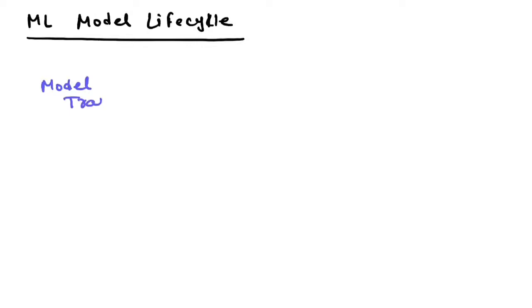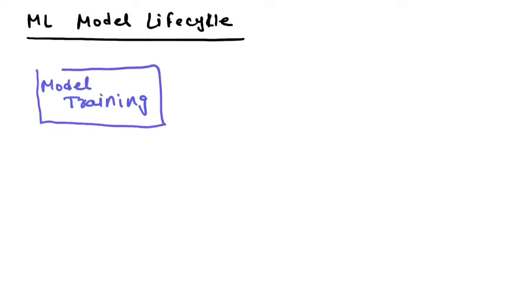The first stage is model training — also called model development. This is the phase where data science people build their model, train it, fine-tune it, and find the optimized equation. Until the model gives the best predictions, they keep training and fine-tuning. This phase is known as model training — the tuning or development of the model.